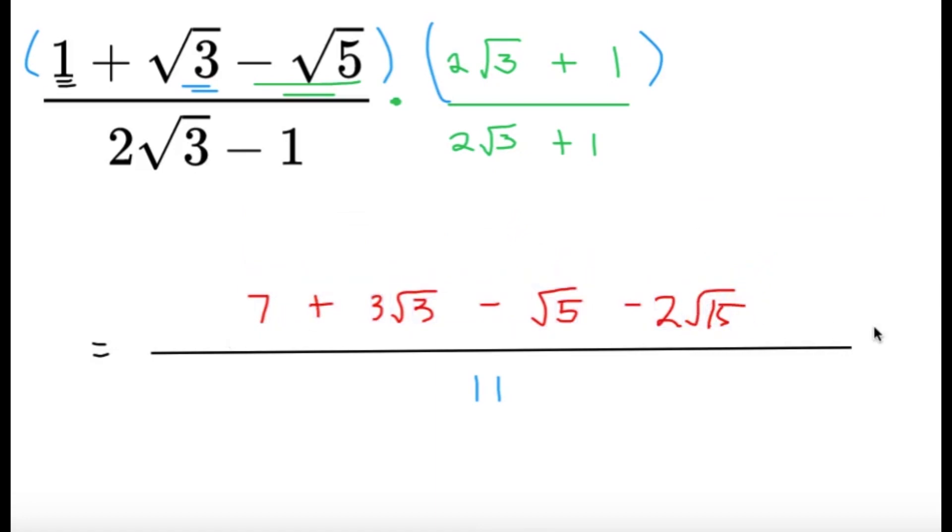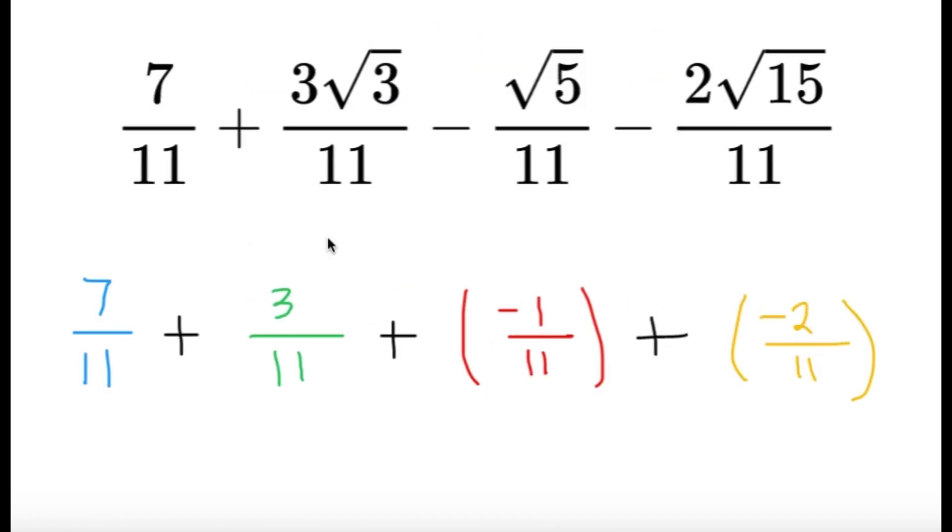And we're just going to have this all over 11. Now since we have this, we can split it into four fractions, which is going to be just 7 over 11 plus 3 square root of 3 over 11 minus square root 5 over 11 minus 2 square root of 15 over 11, as you can see here.